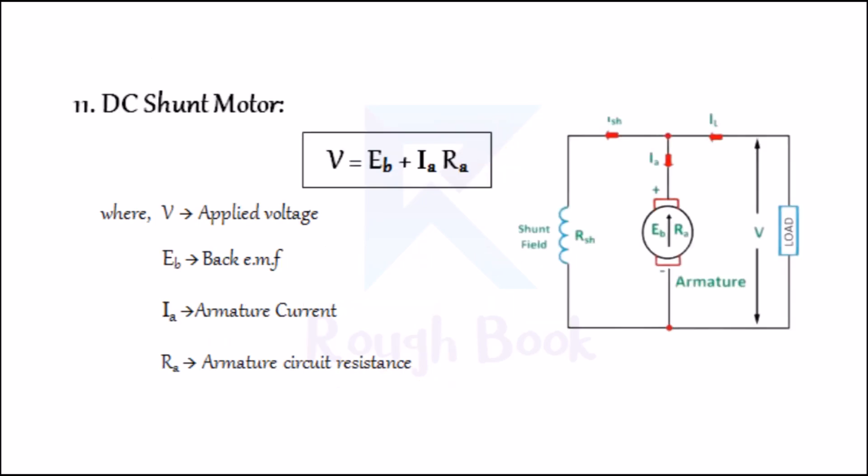Number eleven: DC shunt motors. Depending upon how the field winding is placed in relation to the armature, DC motors are of three types: shunt motors, series motors, and compound motors. For DC shunt motors, the voltage equation is given by V = EB + IA × RA, where V is the applied voltage, EB is the back EMF, IA is the armature current, and RA is the armature circuit resistance.